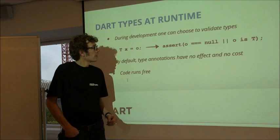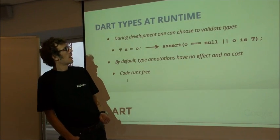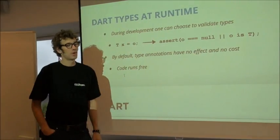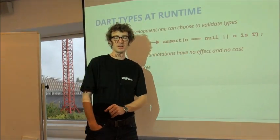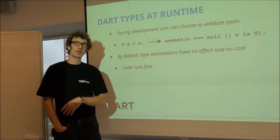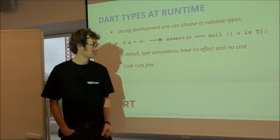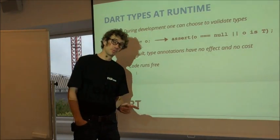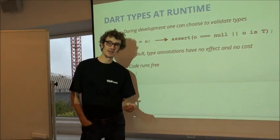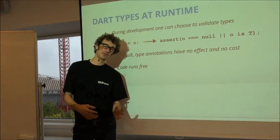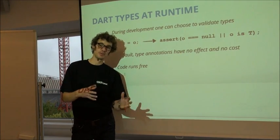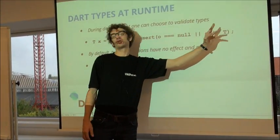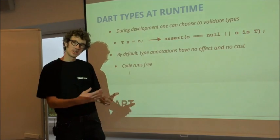The types in Dart are reified, meaning you can actually test if something is of a certain type at runtime using the 'is' operator — like an instanceof check. This also works with generics. If you've been in Java and been annoyed that the runtime doesn't carry information about generics and parameterized classes — in Dart, it does. You can say 'instance of a list of String' and it'll know if it was instantiated as a list of String.